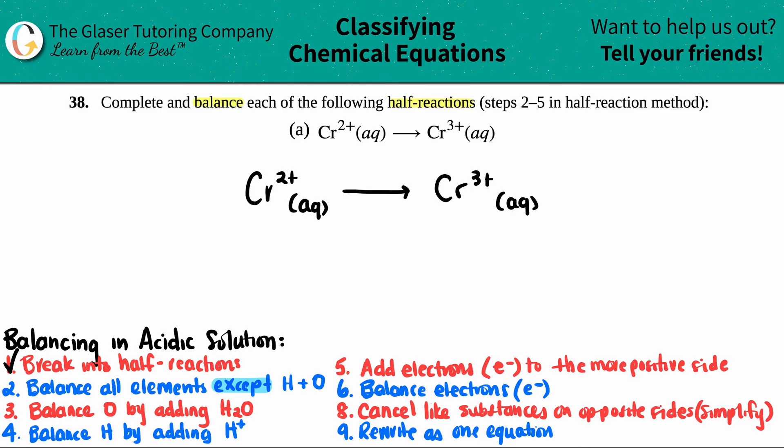So for the second step, we balance all elements except hydrogen and except oxygen. But here, I don't have any hydrogen or oxygen on the left side. I don't have any hydrogen or oxygen on the right side, so who cares? This one's nice and easy. Now, we just look at chromium. I have one chromium on the left. I got one chromium on the right. So they're already balanced. So I can just skip over this step. They already balanced it for us.